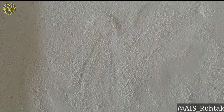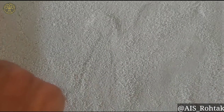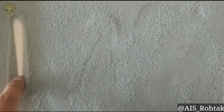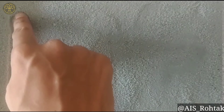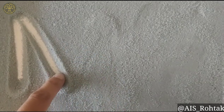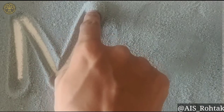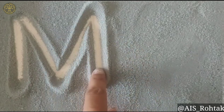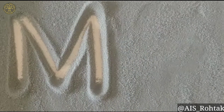Now it's time to do sand tracing of uppercase M and lowercase M. This is our sand tray. In this we will write uppercase M and lowercase M. For uppercase M, start from the top. Make one standing line. From this point, make one backward slant. Now from this point, make one forward slant. Now make one standing line. So this is uppercase M.